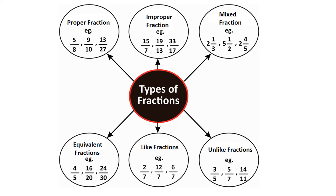The next one is mixed fraction. A combination of a whole number and a proper fraction is known as a mixed fraction. For example, 2 integer 1 upon 3, 5 integer 1 upon 2, and 2 integer 4 upon 5. The next one is equivalent fractions. In equivalent fractions, the value of the fractions are equal. For example, 4 upon 5, 16 upon 20, and 24 upon 30.